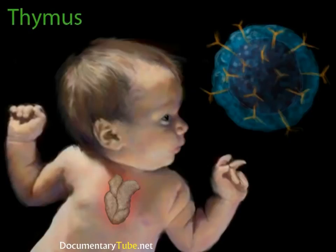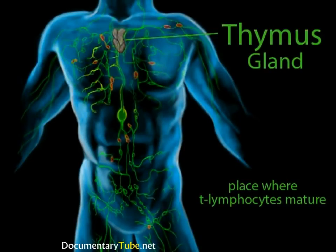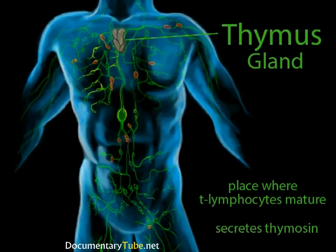For example, if you have type A blood, T-lymphocytes which attack the A antigen are destroyed; however, T-lymphocytes which attack the B antigen are allowed to mature and enter the bloodstream. The thymus is called a gland because it also secretes hormones, making it part of the endocrine system. Its principal hormone is thymosin. We know that thymosin affects the immunological response of the body, though the exact mechanism remains unclear. One prevalent thought is that thymosin stimulates the activity of lymphocytes to migrate to other lymphatic tissues.